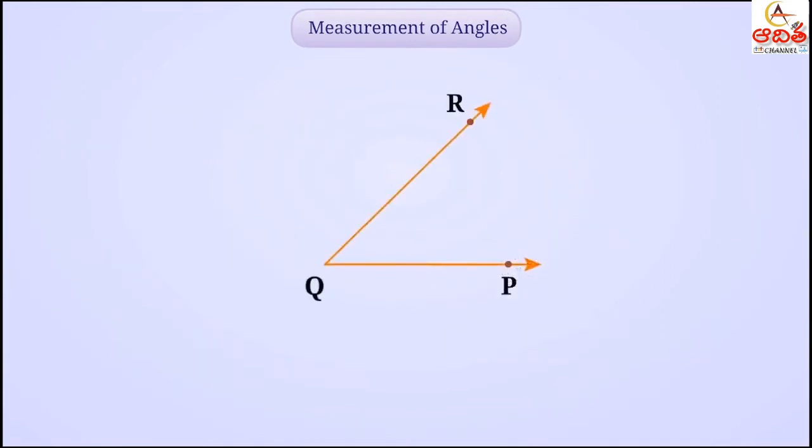Look, here is ray QP and ray QR. They are starting from the same common starting point Q and create an angle PQR. Here, point Q is the vertex of angle PQR. Similarly, ray PQ and ray QR are the sides of the angle PQR.